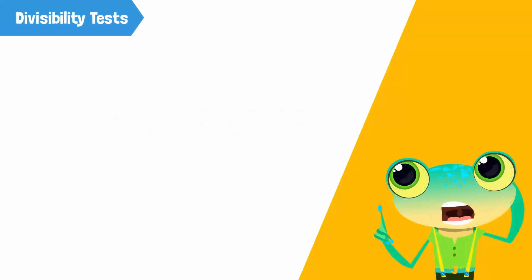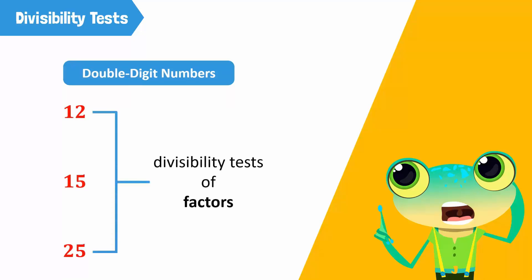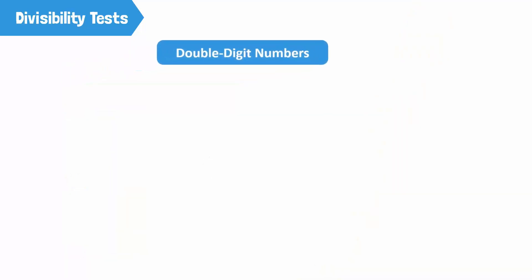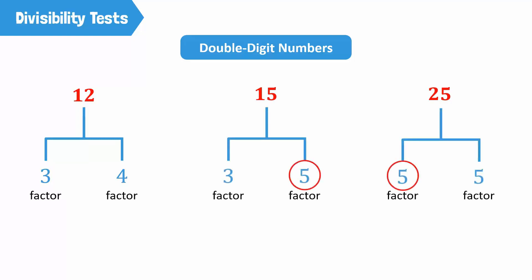The divisibility tests for most double-digit numbers, such as 12, 15, and 25, are based on the divisibility tests of their factors. In order to understand the divisibility test for the number 12, you must know about the rules of divisibility for the numbers 3 and 4. Why? Because 3 and 4 are factors of 12. Similarly, 5 is a factor of 15 and 25, so we use the divisibility test of 5 to test the divisibility of 15 and 25.